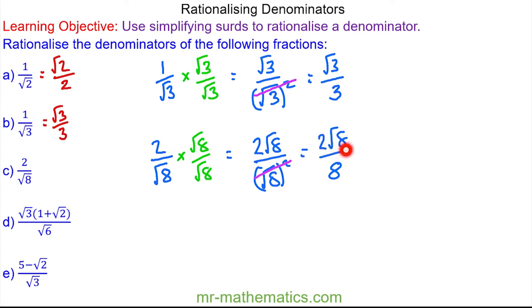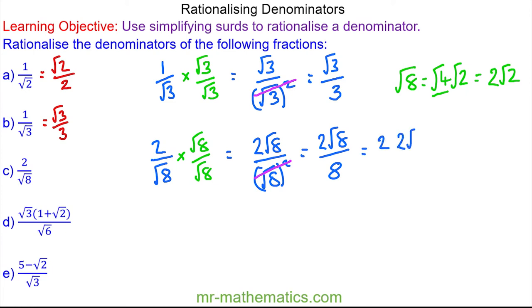Now we are going to simplify this surd. The square root of 8 can be written as root 4 times root 2. We know the square root of 4 is 2, so this becomes 2 root 2. We'll put this back into our numerator in place of root 8. So we have 2 lots of 2 root 2 over 8. We can simplify this fraction by dividing both by 4, so this becomes root 2 over 2.